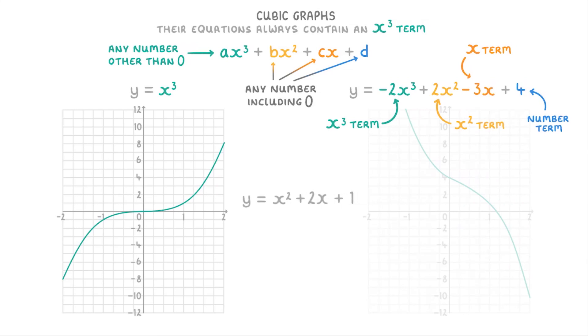So something like x squared plus 2x plus 1 doesn't count as cubic because it doesn't have an x cubed term. And x to the power 4 minus 2x cubed plus 1 also doesn't count as cubic because it has an x to the power 4 term which isn't allowed.